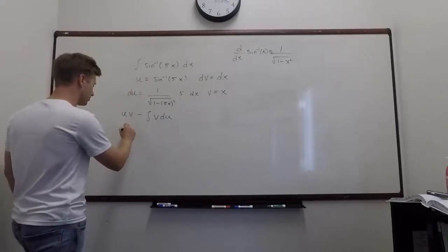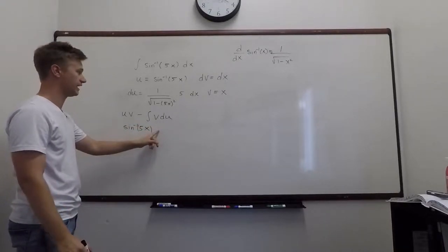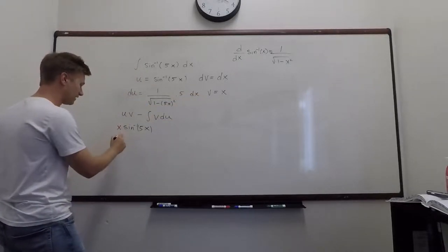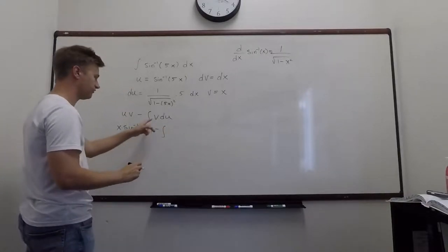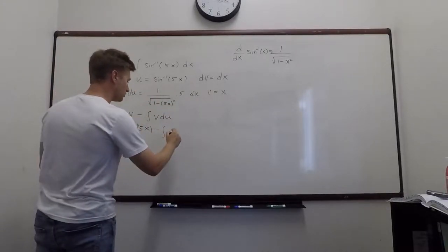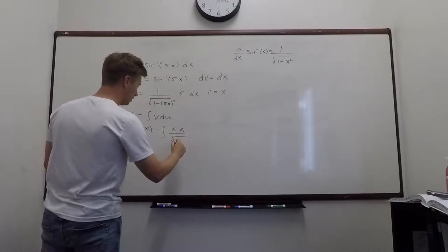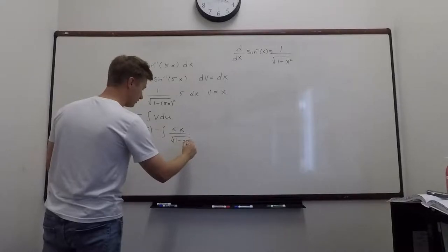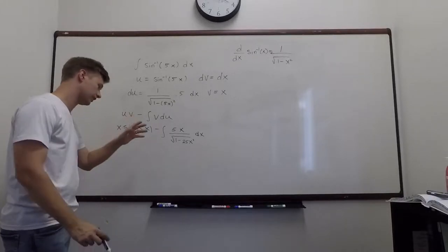Okay, so u is equal to inverse sine 5x times v. And v is equal to x. So I'm going to put the x out front. So it's x times inverse sine 5x minus the integral of v times du. Okay, so v is just x and du is this whole thing. So I have 5x over square root 1 minus 5x squared. So I guess we can write that as 25x squared dx. Okay, so now we're here.